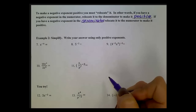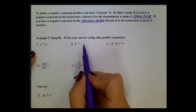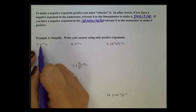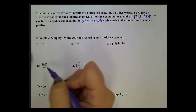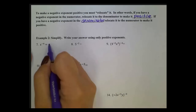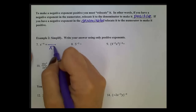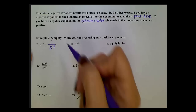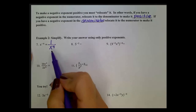Let's look at the examples. The directions say: write your answer using only positive exponents. In number 7, I see x to the negative fourth power and I only want positive exponents. My suggestion is: whenever you end up with a negative exponent, make a fraction bar — because where it is isn't working. To make it positive, we relocate it. This is in the numerator, so moving it to the denominator makes it positive, and we give it a numerator of 1. We've rewritten it using only positive exponents.